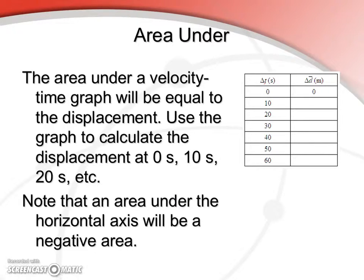So now, let's talk about the area underneath the curve. So as we've covered before, the area under velocity-time graph will be equal to the displacement. And we can use the graph to calculate the displacement at various increments. Please do that now, pause the video, and return when you've done that. Don't forget that the area under the horizontal axis will be negative.